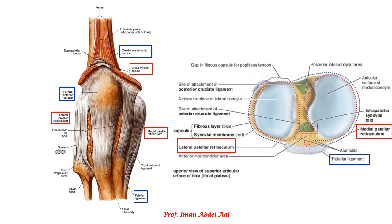This picture shows the quadriceps tendon, which is cut, the patella, the ligamentum patellae, the medial patellar retinaculum, and the lateral patellar retinaculum.